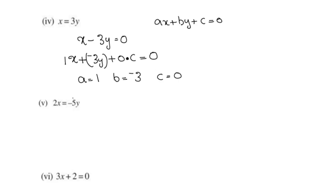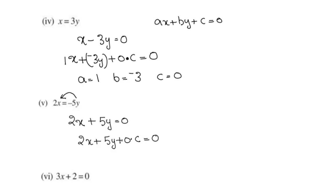For 2x equals negative 5y, we rearrange to get 2x plus 5y equals 0, or 2x plus 5y plus 0 equals 0. This is in the standard form ax plus by plus c equals 0.